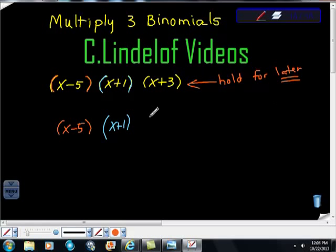So now I'm just gonna actually FOIL this thing out and I get x times x is x², x times 1 is 1x, negative 5 times x is negative 5x, negative 5 times positive 1 is negative 5.